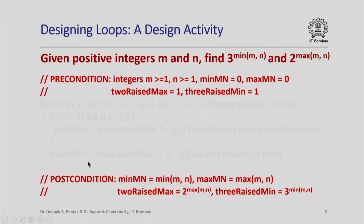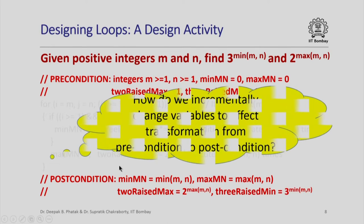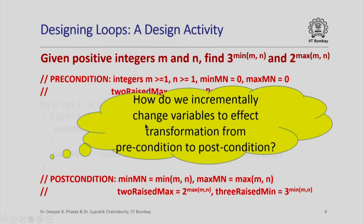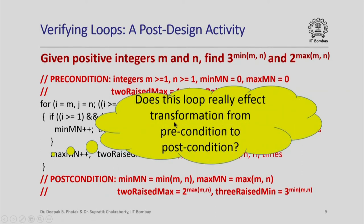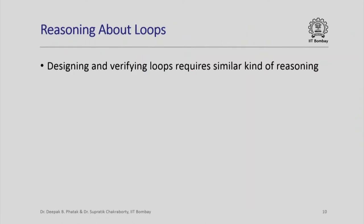Suppose I did not give you the loop but only the precondition and postcondition, and asked you to design a loop that would go from the precondition to the postcondition — that is a design activity. Alternatively, given the loop, we can ask whether it really affects the desired transformation from precondition to postcondition — this is called verifying a loop, a post-design activity. Both designing and verifying loops require very similar reasoning, so we will look at both together.